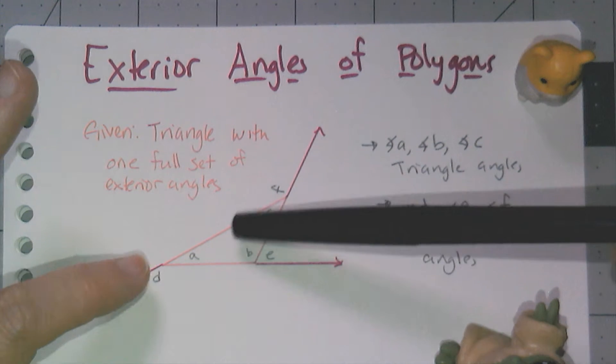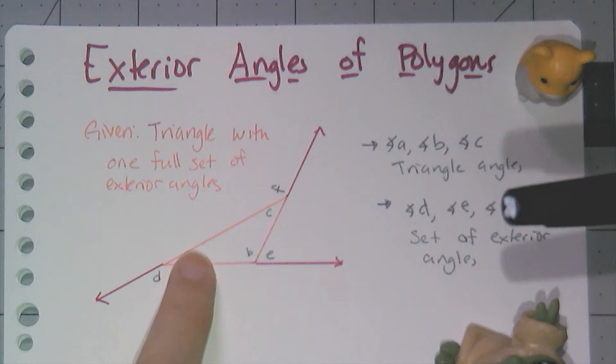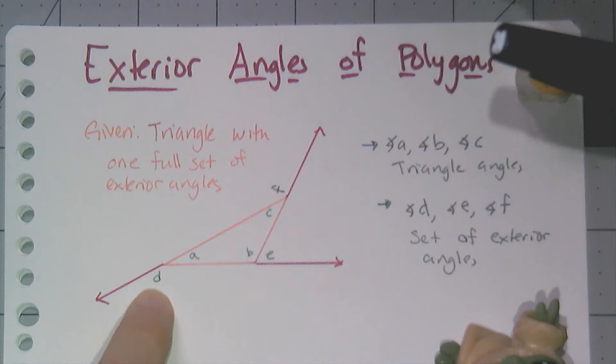Basically you take a side of your polygon, you extend it out, and you get this linear pair between the polygon's angle and this other angle, and this other angle out here is the exterior angle.